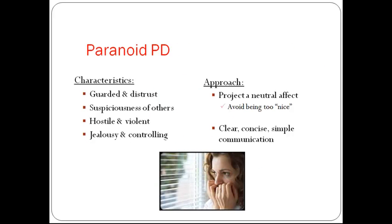Paranoid personality disorder: they are secretive, emotionally cold, and excessively serious. These patients believe others want to exploit, harm, or deceive them without significant proof. They doubt the loyalty of friends or associates and the fidelity of a spouse. They read hidden demeaning or threatening meaning into benign remarks, demonstrate jealousy and controlling behaviors, and hold grudges. They're difficult to interview and don't confide in others. Their defense mechanism is projection. An example is a client who thinks security cameras are the government watching them.